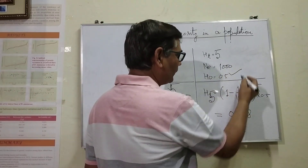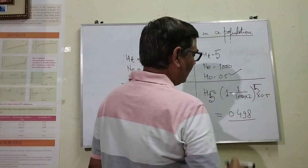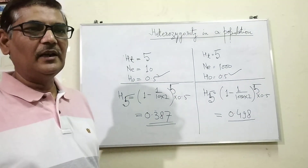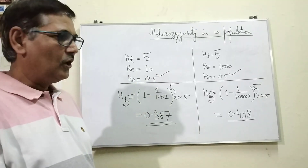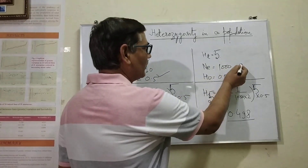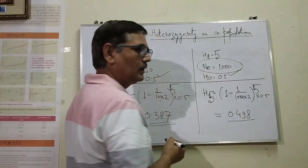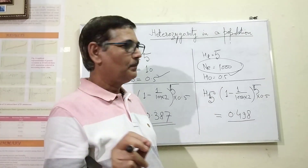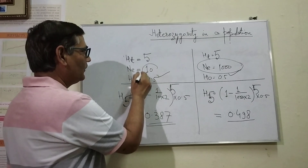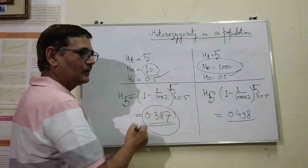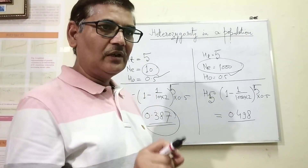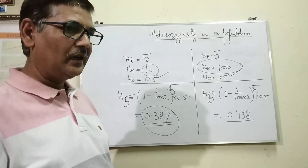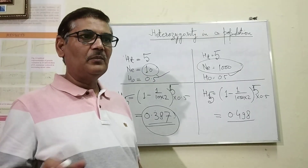Ultimately, the frequency which was 0.5 has come down to 0.387. Here, with 1000 individuals it started at 0.5 but has changed very little — it is 0.498 — almost similar to the initial frequency. So this indicates that when there is a larger number of individuals present in a population, that is going to influence heterozygosity to a very subtle level. Whereas if very few individuals are there, there will be higher chances of inbreeding, and that will result in a reduction in heterozygotes. So heterozygosity is highly influenced by the number of individuals present.